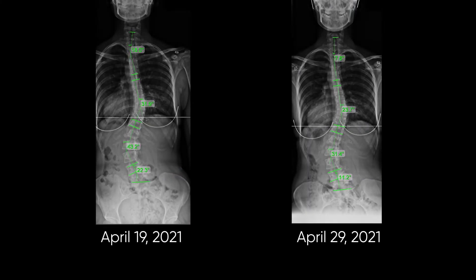Cobb angles are measured in degrees — 10, 20, 30, 40, and so forth. This angle determines whether you have mild, moderate, or severe scoliosis: mild being less than 25 degrees, moderate between 25 and 45, and severe at 45 degrees or greater. Unfortunately, this Cobb angle can be influenced by the position in which your x-ray is taken.